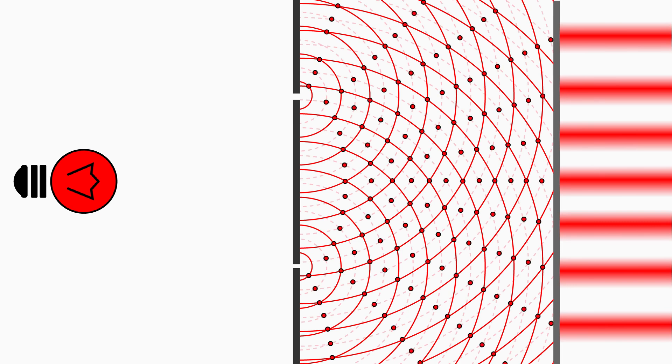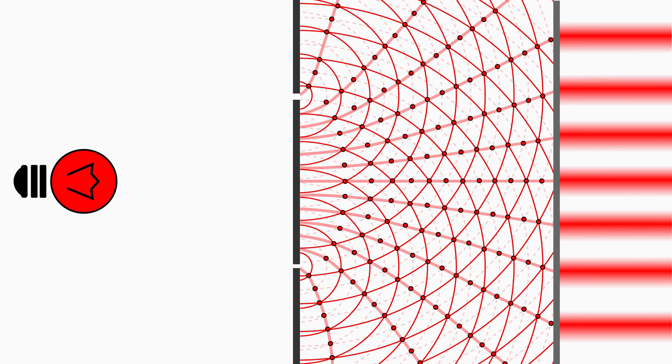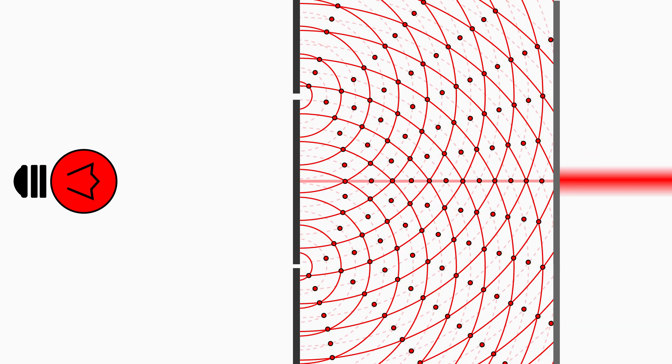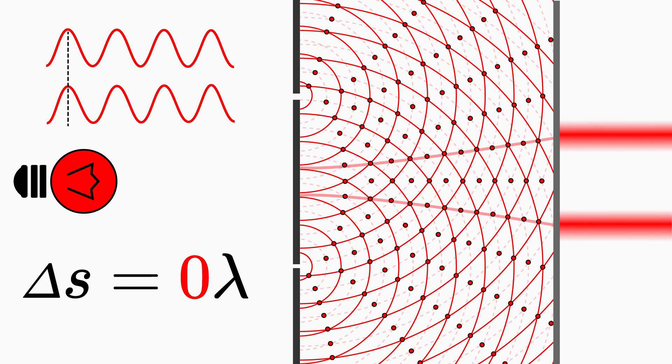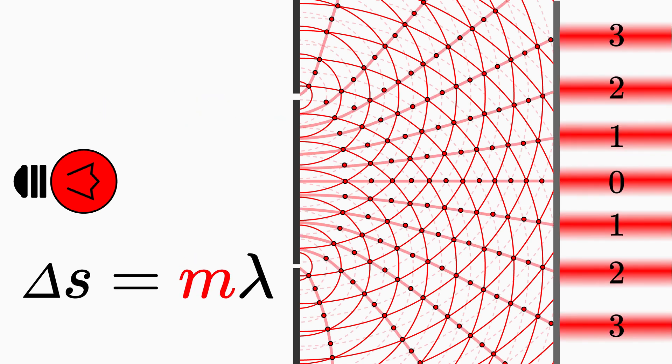If you follow the points of constructive interference up to the screen, you will reach the maxima. The zero order fringe occurs in waves with a path difference of zero, that is m equals zero. The first order fringe occurs at a path difference of exactly one wave length, that is m equals one, and so on. Now you understand where this numbering of the fringes comes from, namely from the number m, which indicates how large the path difference of the interfering waves is.